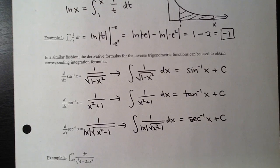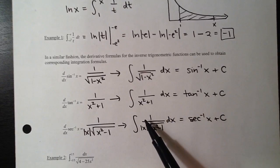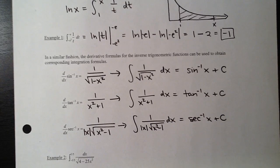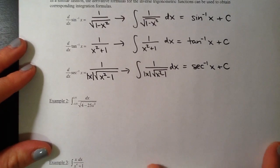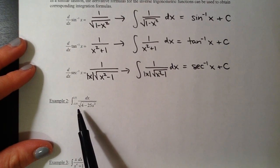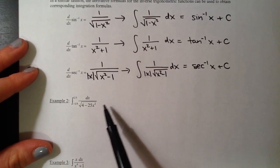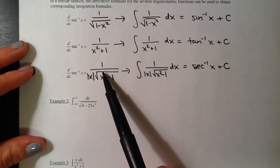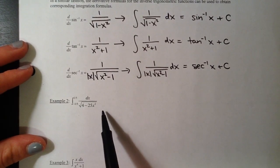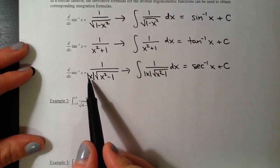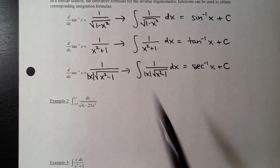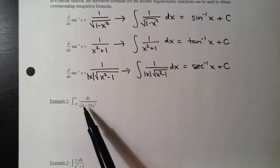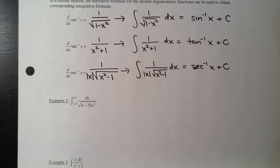Example 2 involves taking things that sort of look like one of those three formulas and doing u-substitutions like in the previous section. For this definite integral, we want to figure out which form it most resembles. It's subtraction, so it's either sine or secant. There's a square root, so it's either sine or secant. And since the variable is entirely under the square root with nothing outside, we know it fits the form of sine inverse. We note this is a 1 and this is a 4 — we need to make that 4 into a 1, so the best way is to divide by 4.